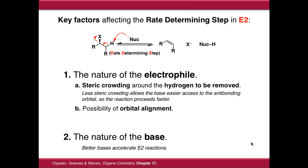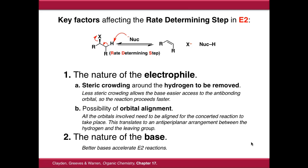To summarise the possibility of orbital alignment: all orbitals involved need to be aligned for the concerted reaction to take place, which means the hydrogen to be removed and the leaving group must be anti-periplanar to each other.